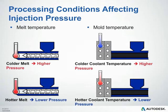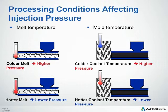Looking at how melt and mold temperatures affect injection pressures: temperatures impact the viscosity of our material. A higher melt temperature typically results in lower pressure; a cooler melt temperature means higher pressure. The same applies to mold temperature — cooler molds typically require higher pressure to fill because the frozen layer forms more quickly, whereas hotter mold temperatures typically result in lower required pressure.